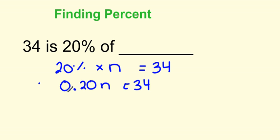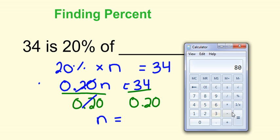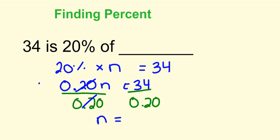If I go ahead and divide each side by 0.20, that's going to give me n by itself. So these two cancel out. We're left with n. And now we just have to figure out what 34 divided by 0.2. And that's 170. So 20% of 170 is 34. If you have any questions, please leave them in the comment section below.